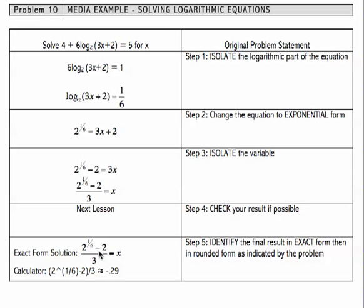To determine the rounded value, I need to enter this entire fraction into my calculator at once, and I'm going to do so as follows. Parentheses, 2, caret, parentheses, 1 sixth, minus 2, in parentheses, divided by 3. Hit the Enter key.